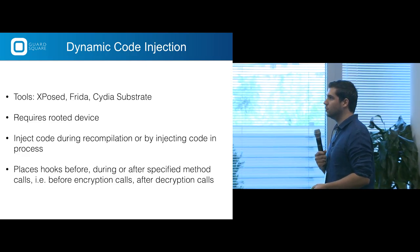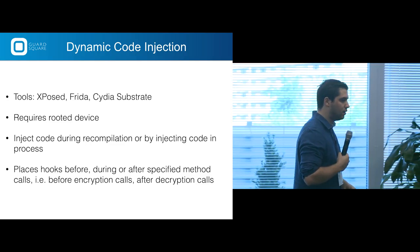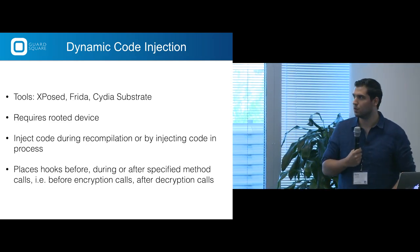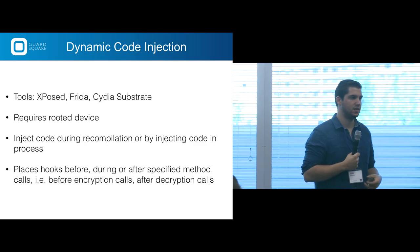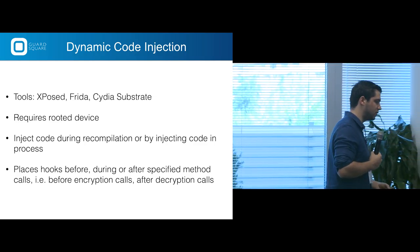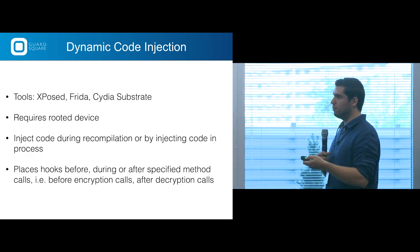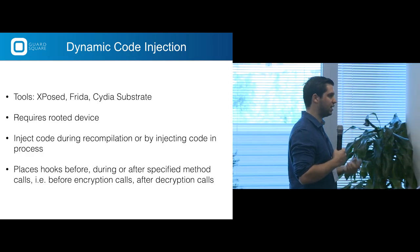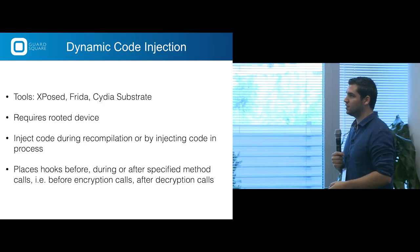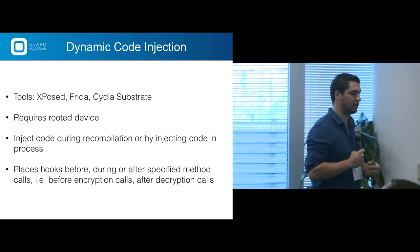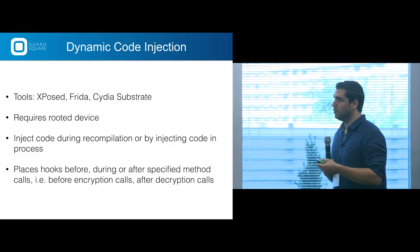For dynamic code injection, tools are Xposed, Frida, or Cydia Substrate — they all require a rooted device. The way they work is they inject code during recompilation or inject code into your process. On Android, when you install an application it gets recompiled — that optimization dialog you see saying 'optimizing apps' is your Android device recompiling and optimizing apps for your device. This is a perfect point for a tool to inject its own code. You can place hooks before, during, or after method calls that you find interesting.